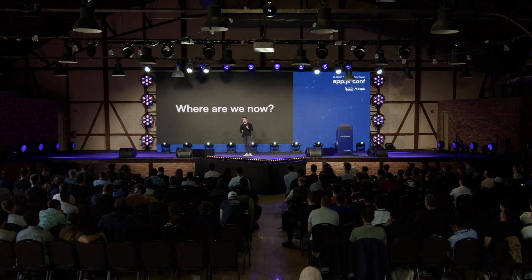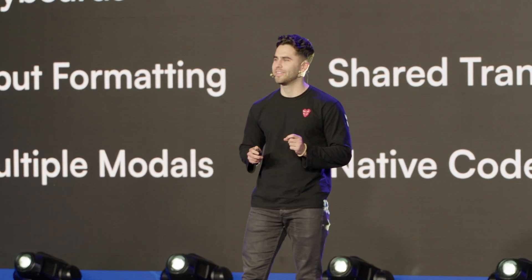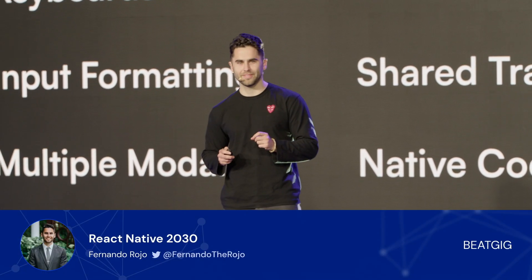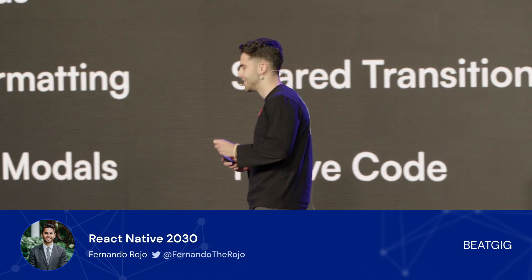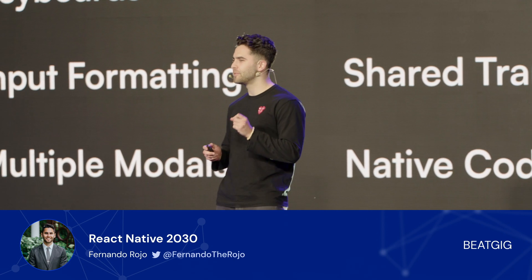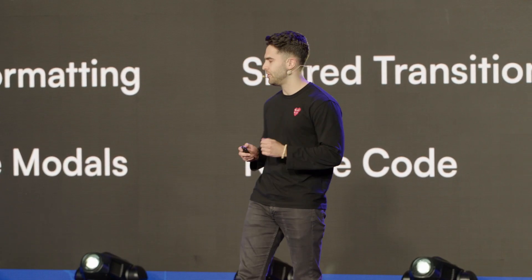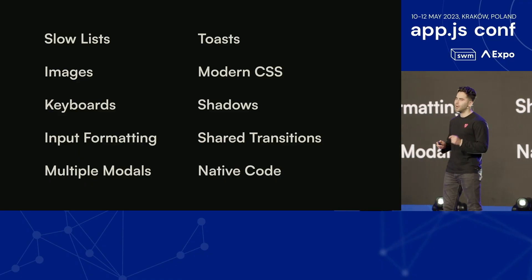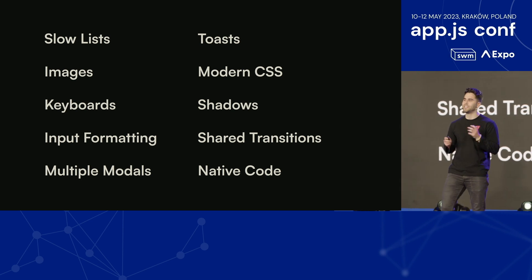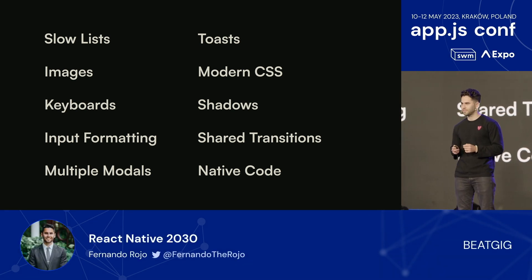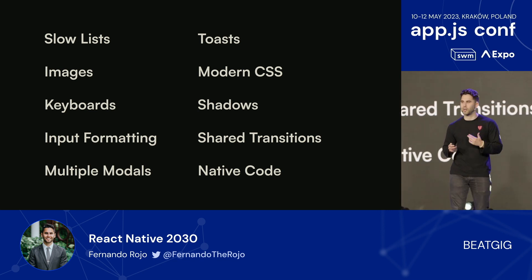Where are we now, and where are we going? Our lists are slow, and our images flicker. Our keyboards cover our inputs, and our inputs can't format text. We can't use multiple modals, and we can't put toasts on top of modals. We can't use modern CSS, our shadows barely work, it's hard to do shared element transitions, and I don't know how to use native code. If you've been a React Native developer, facing these issues is almost a rite of passage.